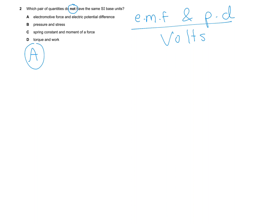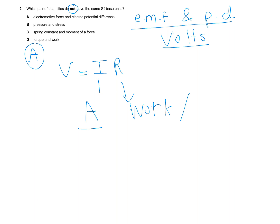Let's prove it: both are measured in volts, so V = IR, where I is current in amps and R is resistance. Resistance equals work over charge. Work is force multiplied by distance in the direction of the force, and charge is current multiplied by time — amperes times seconds.